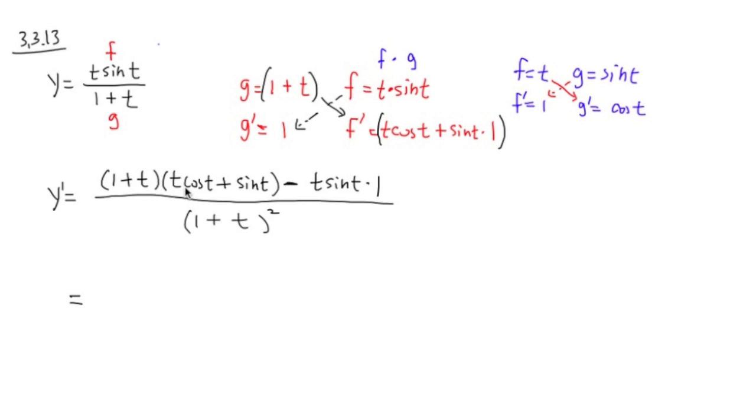Now, let's take a look. For the top part, I will have to distribute. Right? The 1 times this. The 1 times that. And then I also have to do the t times this. T times that. All right? So let's do it. 1 times t cosine t is just t cosine t. And 1 times sine t is just plus sine t.